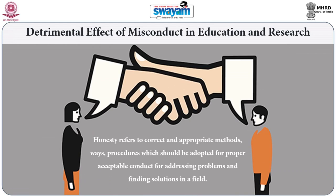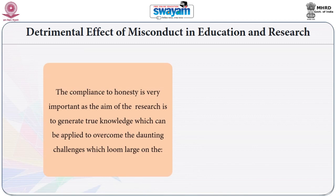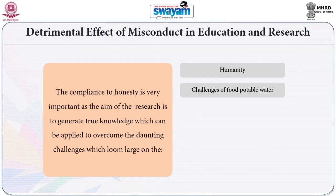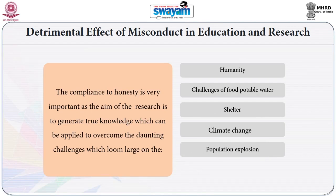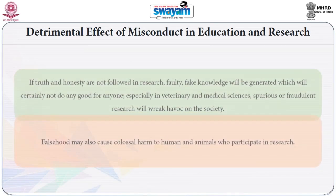Moving forward, we will now discuss the detrimental effects of misconduct in academics and research. Honesty refers to correct and appropriate methods, ways, and procedures which should be adopted for proper, acceptable conduct when addressing problems and finding solutions in a field. Compliance with honesty is very important, as the aim of research is to generate true knowledge which can be applied to overcome daunting challenges facing humanity — challenges of food, portable water, shelter, climate change, population explosion, and dwindling natural resources for sustainable development.